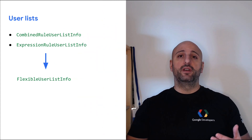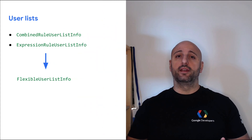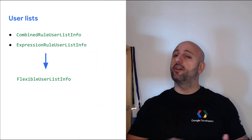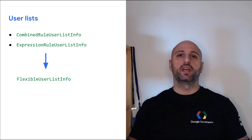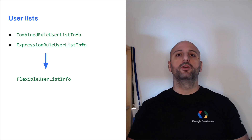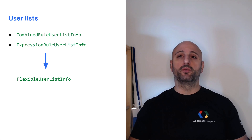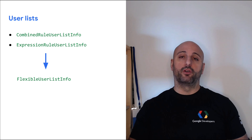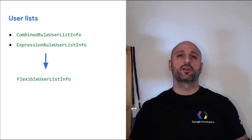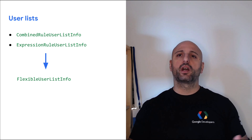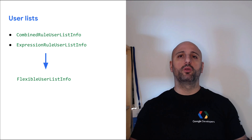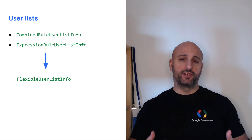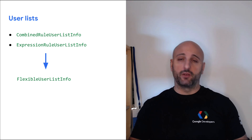Combined Rule UserDist Info and Expression Rule UserDist Info have been removed from the API. You can use Flexible UserDist Info instead to manage your custom audiences. For further information on how to use Flexible UserDist Info, you can check out the guide we have about remarketing with Rule-Based UserDist — there is a link to it in the video description.